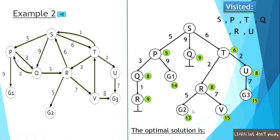So the optimal solution path is S to T, T to R, R to G2, and the total cost is 13.